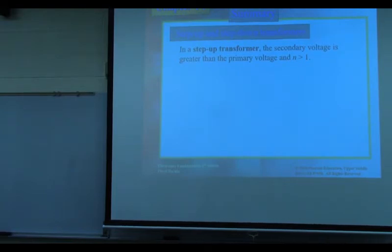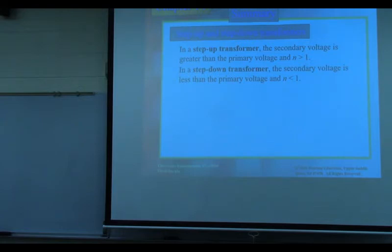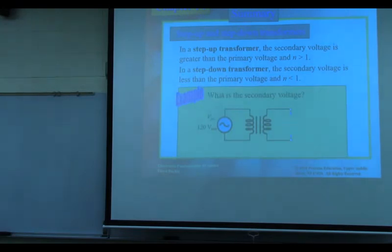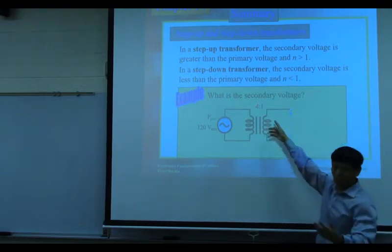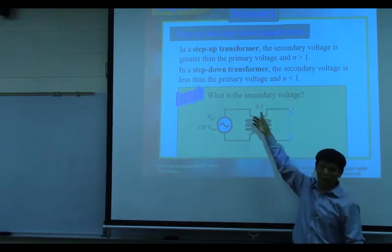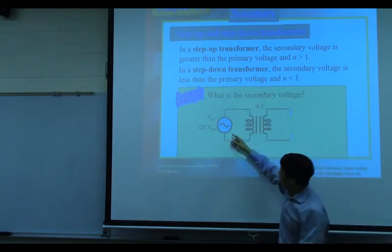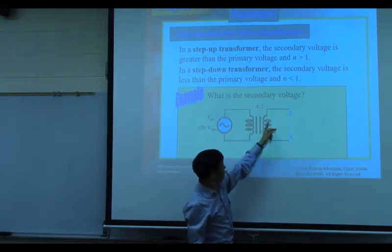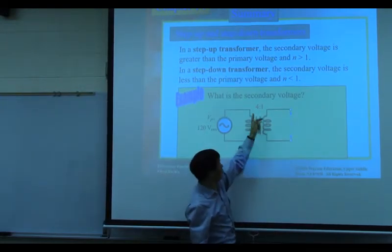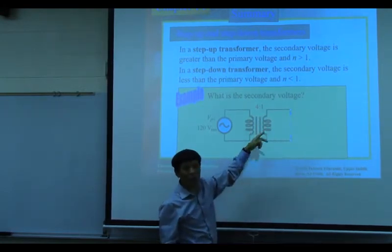For a step-up transformer, the turn ratio n is greater than one — for example, n equals 2, 10, or 100. For a step-down transformer, the voltage on the secondary is lower than the primary, and the ratio n will be less than one. For example, if the turn ratio is 4 to 1 (or 1 to 4 depending on convention), and the primary voltage equals 120 V rms, then the secondary voltage equals 120 times one-quarter, which equals 30 V.